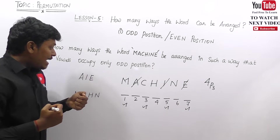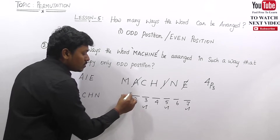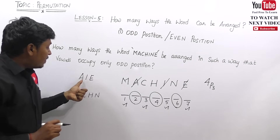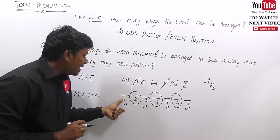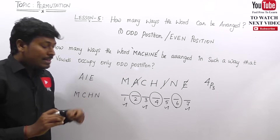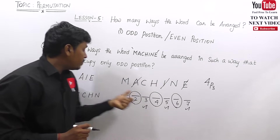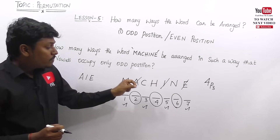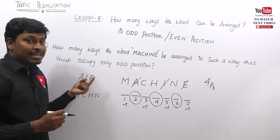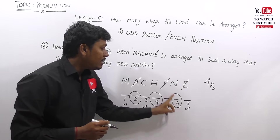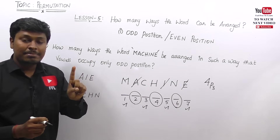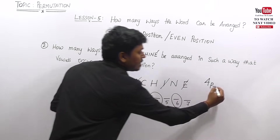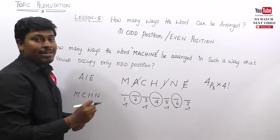Since we place only three vowels into four odd positions, one odd position will remain empty. The even positions are two, four, six — three even places. So we have one remaining odd place plus three even places, giving four total remaining positions. The four consonants M, S, S, N must fill these four places in 4! ways.